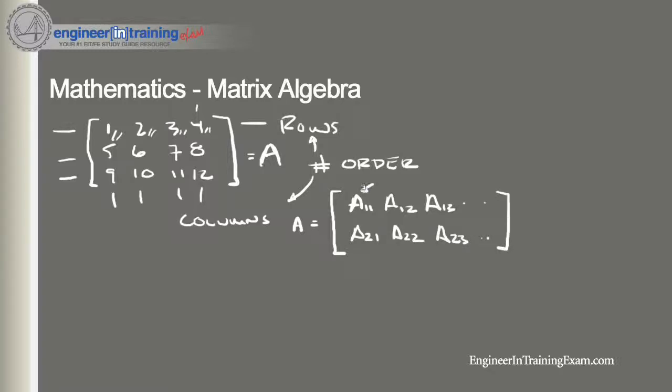So once again, this is the matrix identity. If this was matrix B, that would be B or C. This first subscript right here is the row that that element is in, and the second subscript is the column in which that element is in.